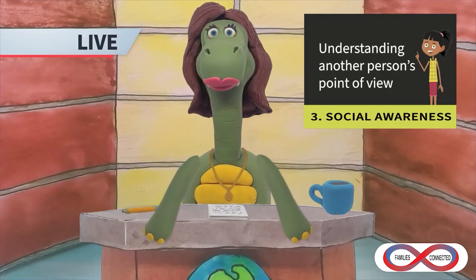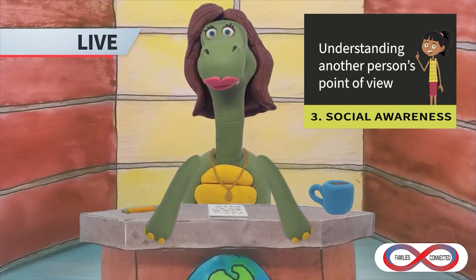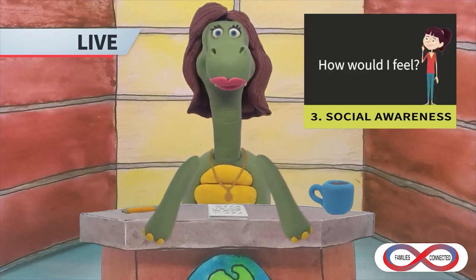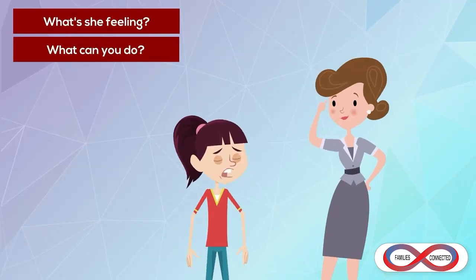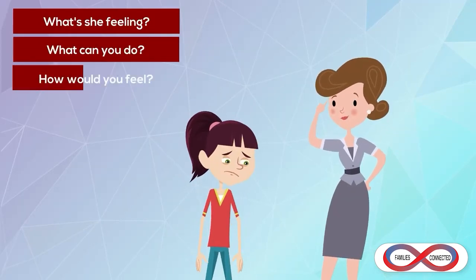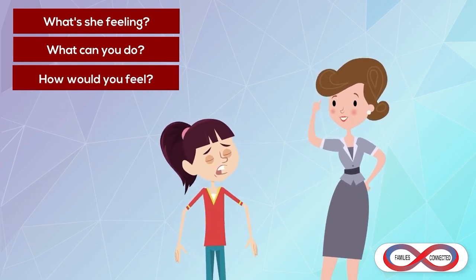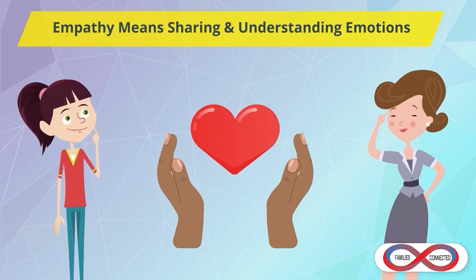Number three: social awareness. Social awareness is taking the view of and understanding others, including those who come from diverse backgrounds. A great question to start building social awareness is, "How would I feel?" You can use characters in books or real-life examples and ask questions like, "What is she feeling? What might you do? How would you feel in that situation?" This will help build your child's awareness and teach them to empathize with others. Empathy — the ability to understand and share another's feelings — is a big part of social awareness.